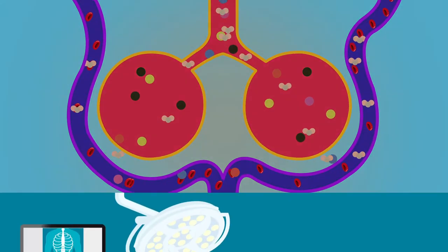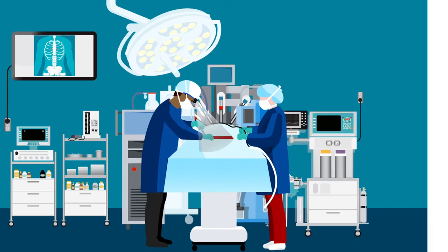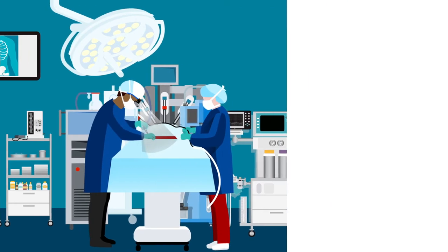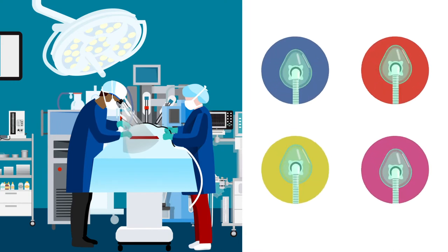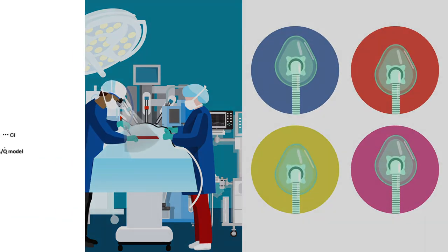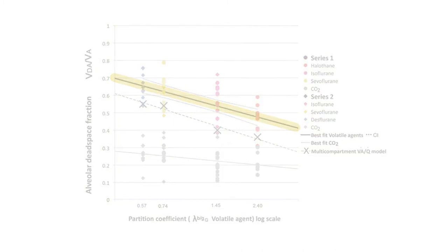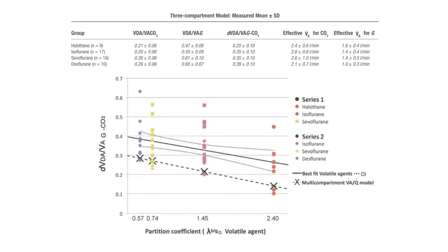The researchers hypothesized that solubility could be a key factor and therefore measured partial pressures in 52 patients undergoing cardiac surgery with four different inhaled anesthetics. They found that the alveolar dead space fraction was inversely related to the anesthetic's blood solubility, with dead space being significantly larger for each volatile agent than for carbon dioxide.